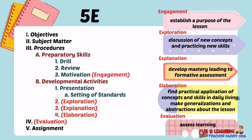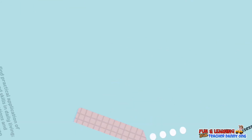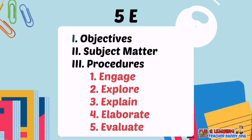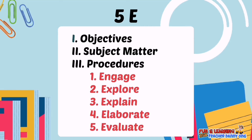To explain further: the Engagement part establishes the purpose of the lesson and can present examples of the new lesson. In the Exploration phase, new concepts are discussed and students practice new skills. In the Explanation phase, mastery is developed leading to formative assessment. In Elaboration, students find practical applications of concepts in daily life and make generalizations. Then they are Evaluated. However, many teachers often write their plan in 5E directly — objective, subject matter, procedure, then the five E's — and because of this, they often forget the essential universal parts. That is why the 7E model was created.